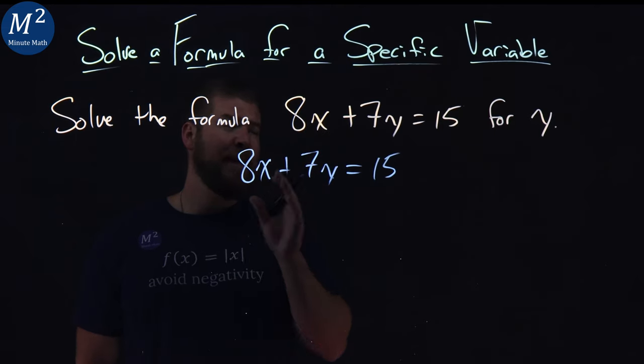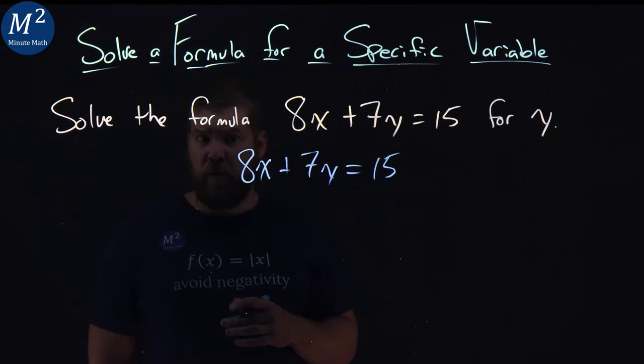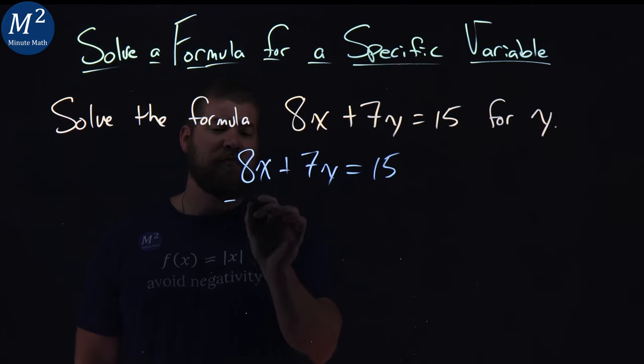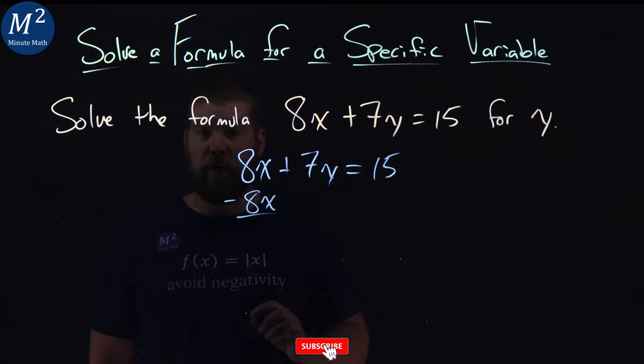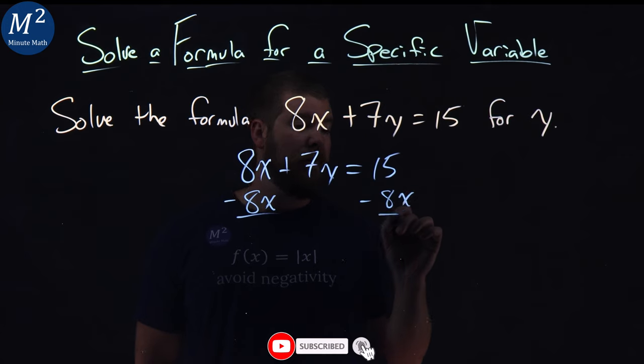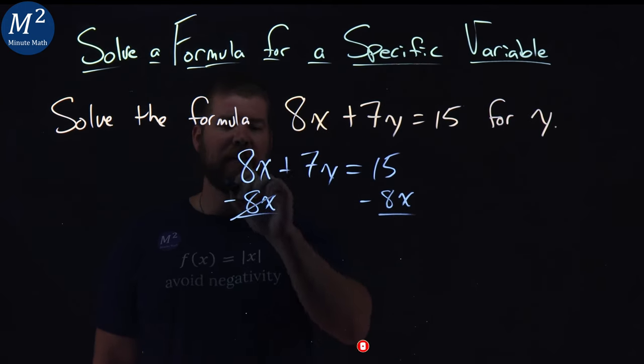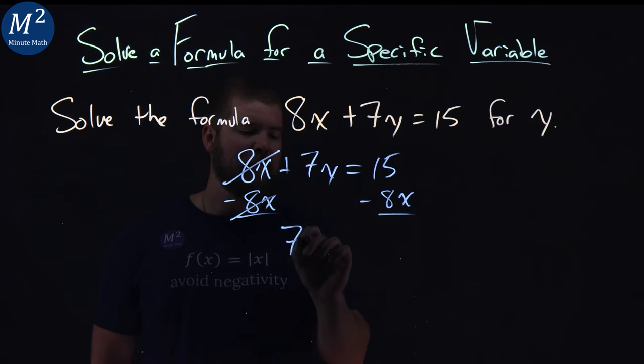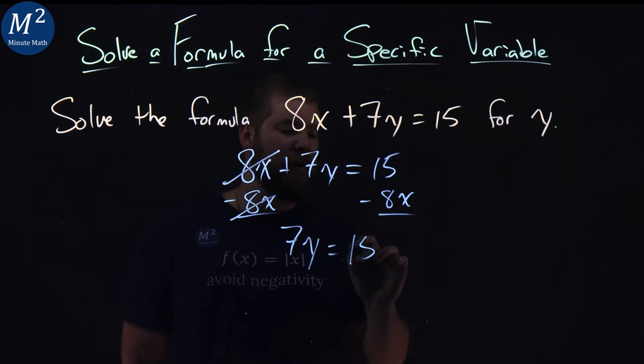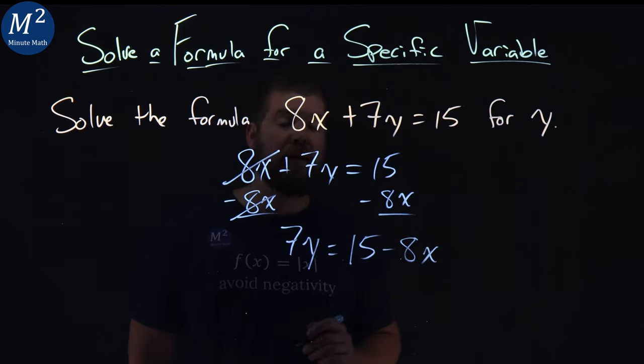Now, to follow my steps here, I want to get y just by itself, so to do that, I'm going to subtract 8x from both sides, because they're being added, opposite of addition, subtraction. 8x cancels here, and I have 7y equals 15 minus 8x.